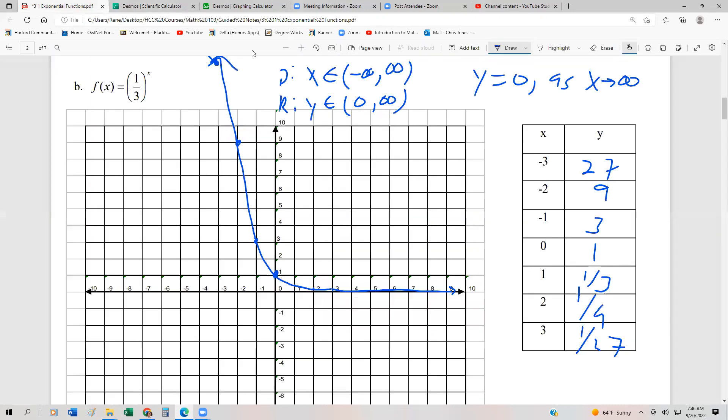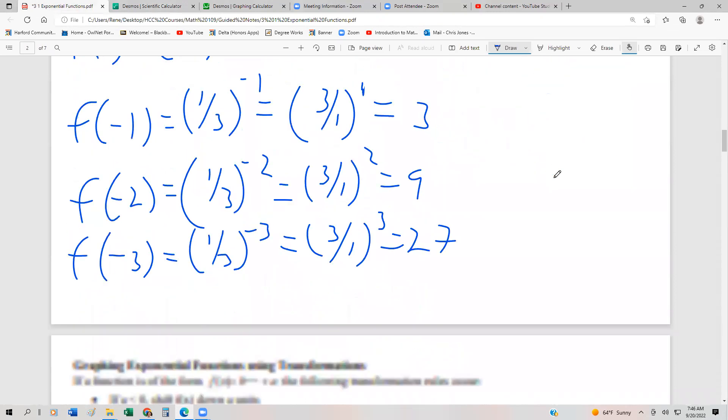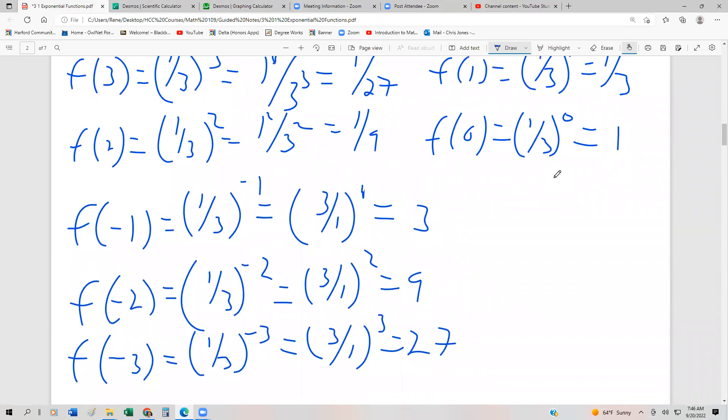If you have like a TI graphing calculator, what you can do is after you hit enter, you just use the command math. So you hit the math key and then you just hit enter twice. So math, enter, enter. And what that'll do is that'll turn a decimal into a fraction.